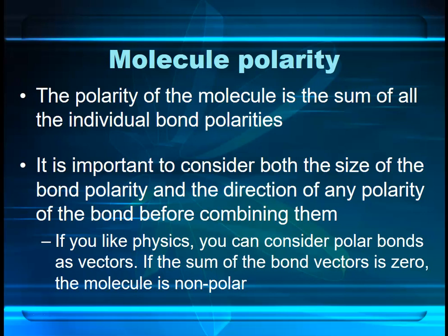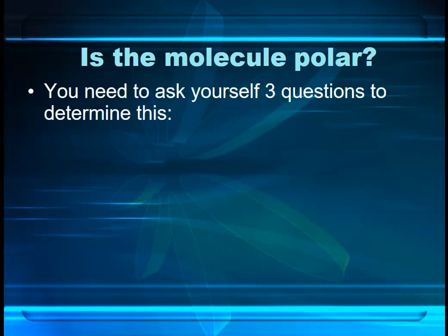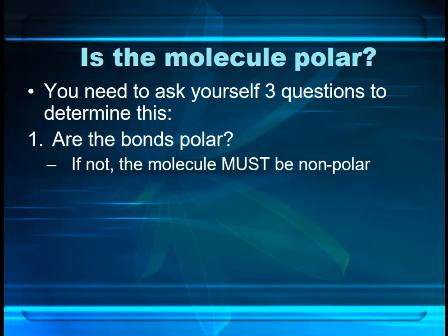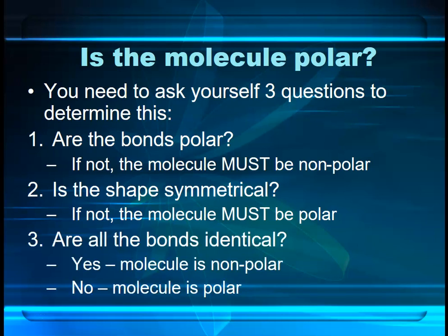To find out if the molecule is polar there are three questions you need to ask yourself. First: are the bonds polar? Because if all the bonds in the molecule are non-polar then the molecule itself has to be non-polar — you cannot have a polar molecule consisting solely of non-polar bonds. Next: is the shape symmetrical? Any asymmetrical shape with polar bonds will automatically be polar. And finally: are all the bonds identical? You could have a symmetrical shape, but if you've got different sizes of bond dipoles you're going to have a polar molecule.